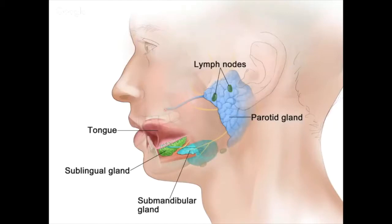And what do they do? They're the goo machines — the salivary glands.